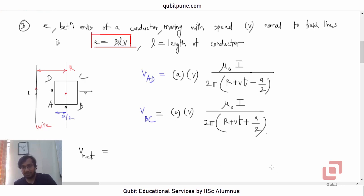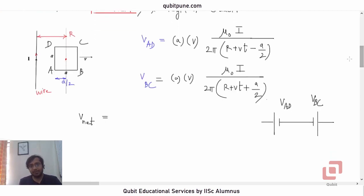Let us say this is V_AD and then this is going to be V_BC. This is going to be V_BC. So, V net will be what? Observe that the denominator of V_BC is actually greater than the denominator of V_AD. So, V_AD must be greater than V_BC. So, it has to be V_AD minus V_BC.